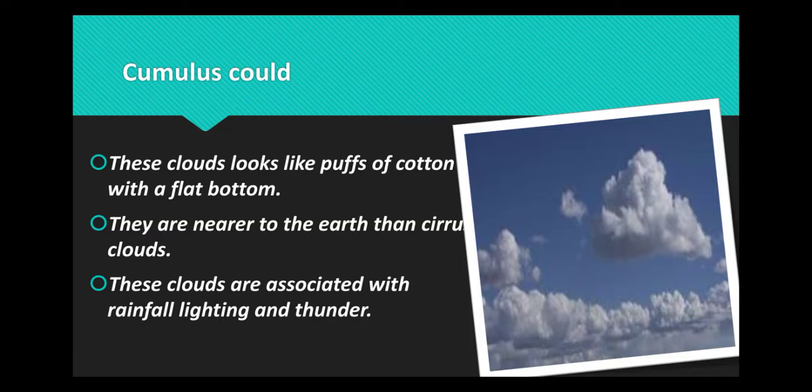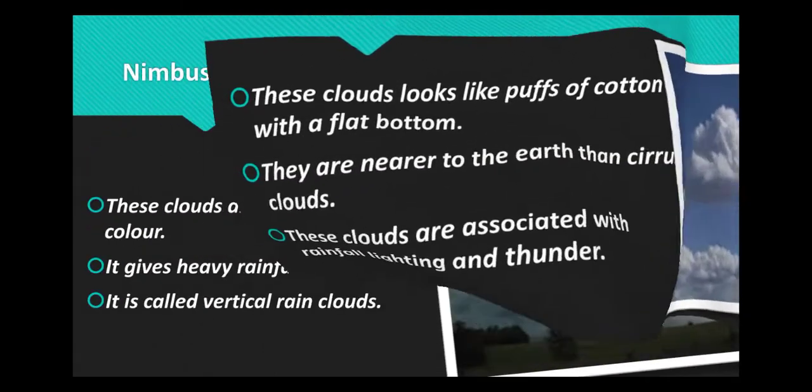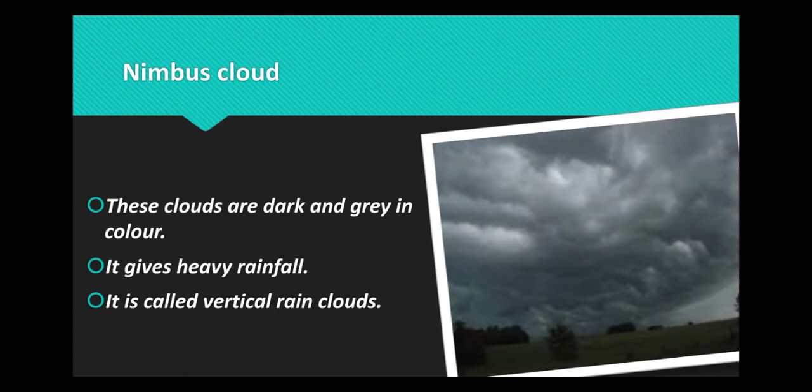Cumulus clouds are associated with rainfall, lightning, and thunder. Nimbus clouds are dark and grey in color. They give heavy rainfall. Nimbus clouds are called vertical rain clouds.